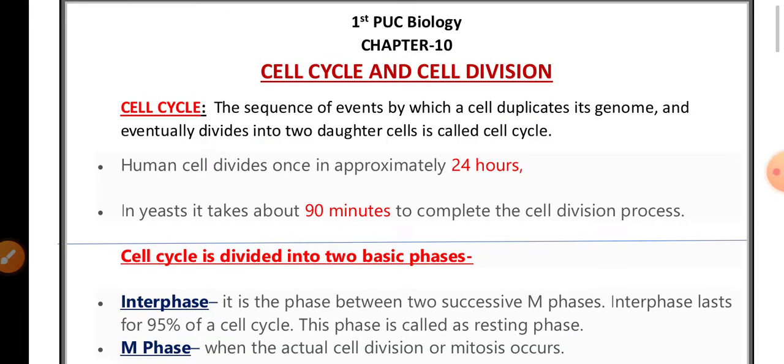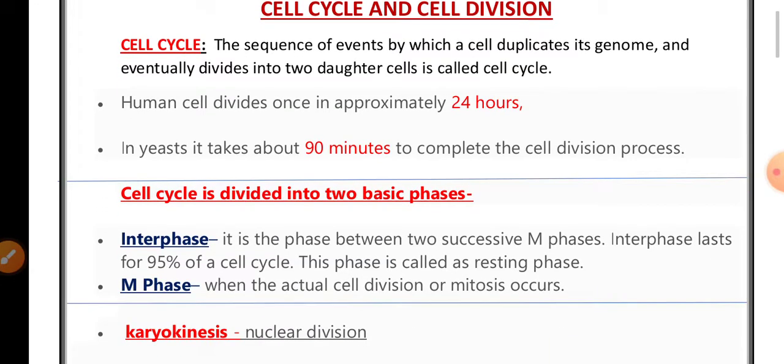Cell cycle is a cyclic or sequential event where a parent cell divides into two daughter cells. Human cells take 24 hours to divide, whereas yeast cells take 90 minutes to divide.